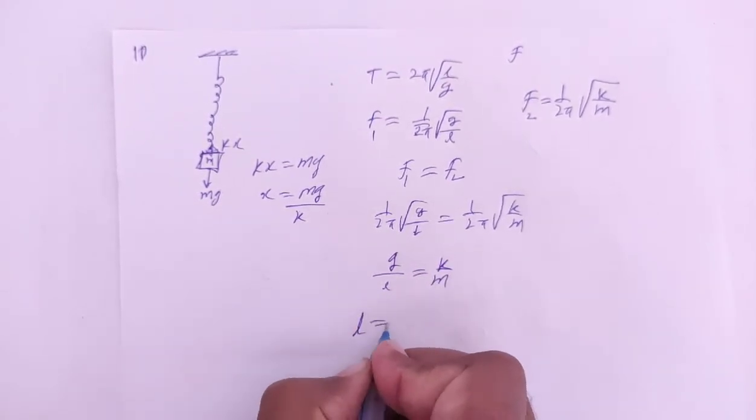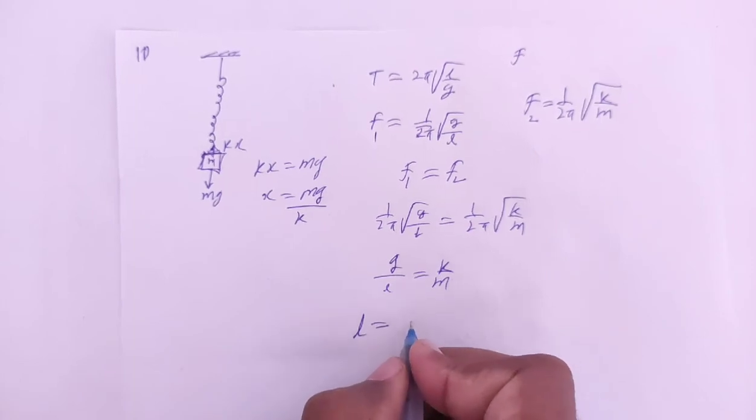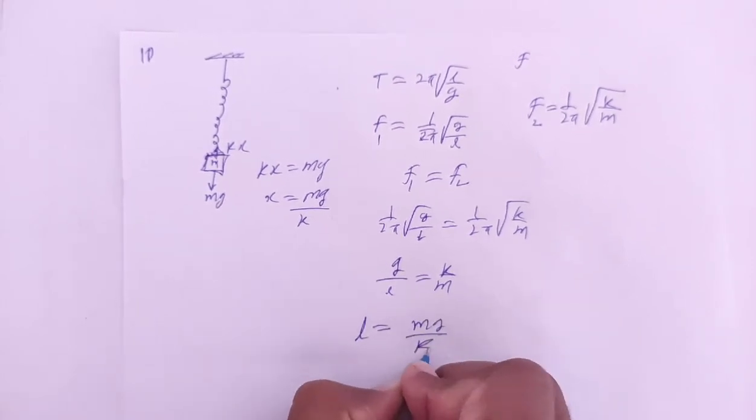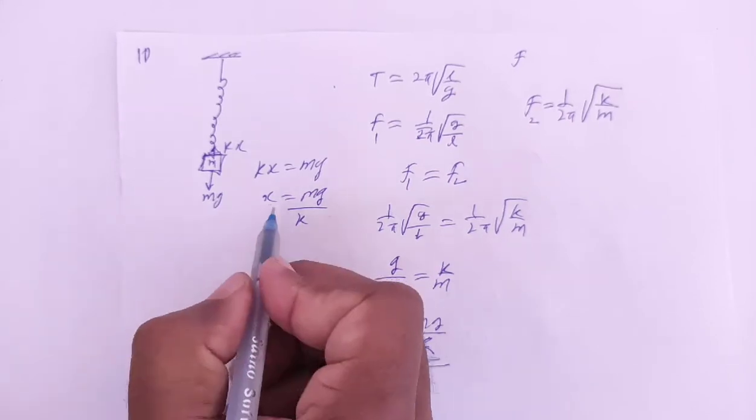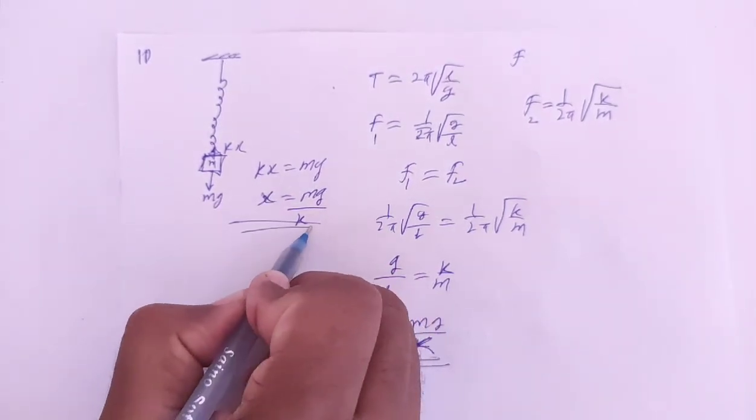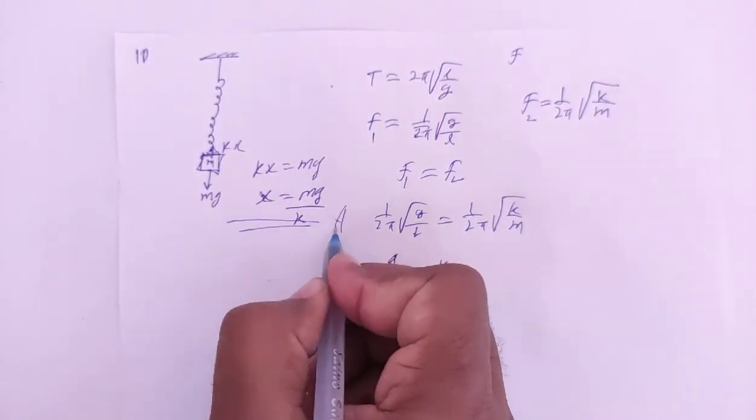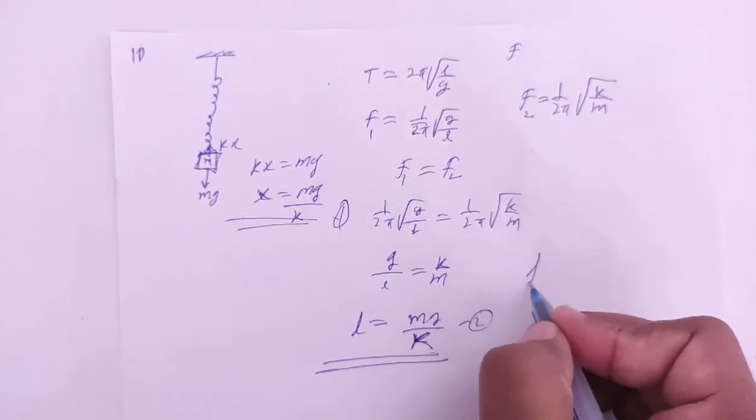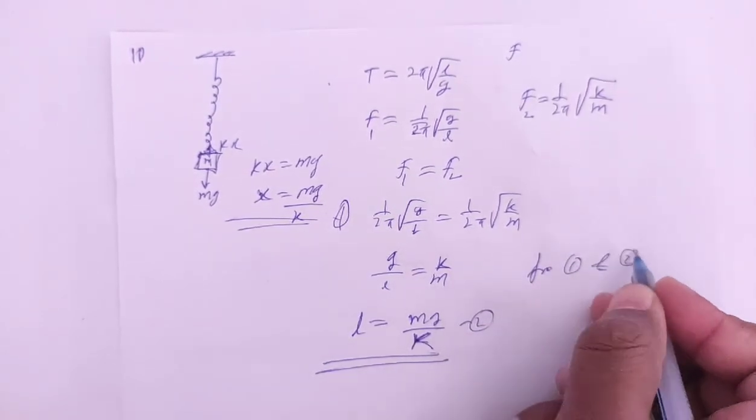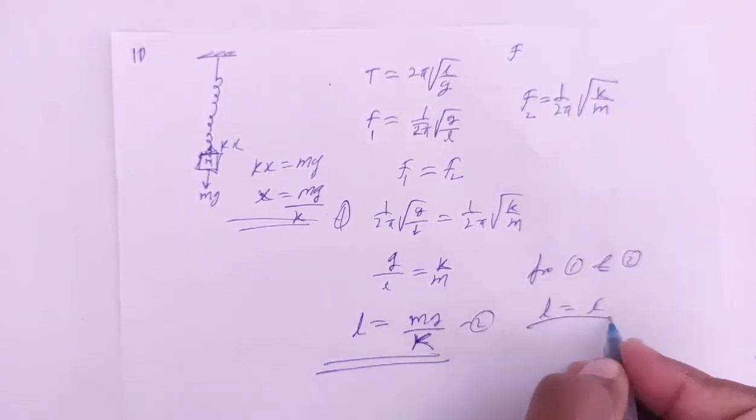So from here, if we find l, l comes out to be mg/k, right? l is mg/k. Look, from here, x is also mg/k. From equation 1 and equation 2, l equals x.